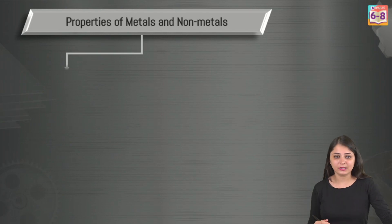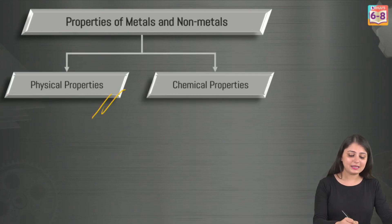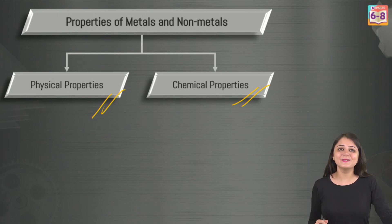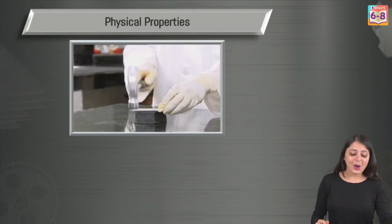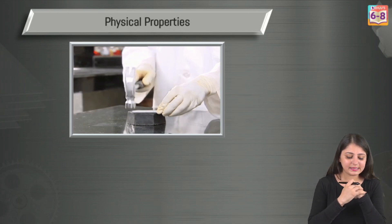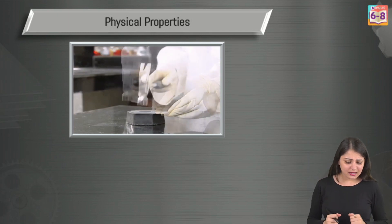We can use various properties to figure out whether a given substance is a metal or a nonmetal. These properties can be physical properties or chemical properties. In today's class we will be exploring the physical properties.